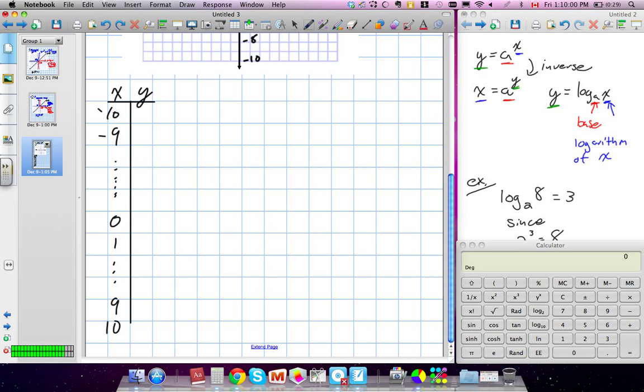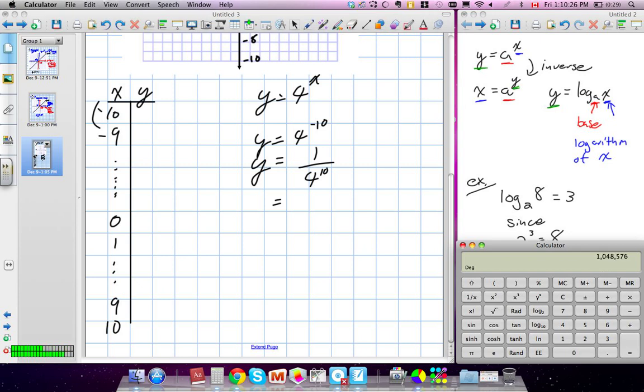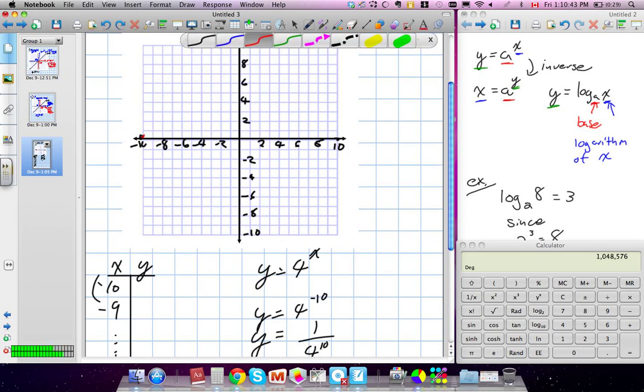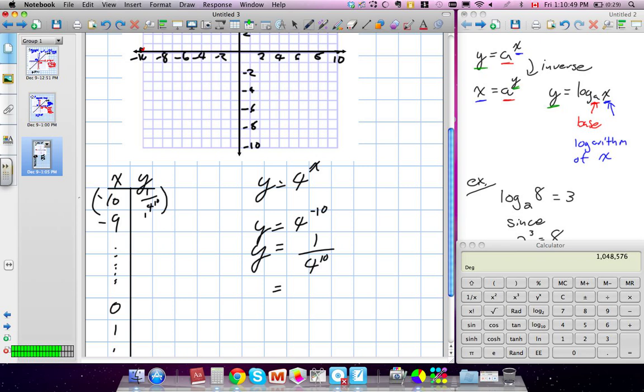We would plug those values into our equation, which is y is equal to 4. And I would start with my first value, because this is x. So my first value, we would do y is equal to 4 to the power of negative 10. Do you know how to flip an exponent? We essentially get y power of 1 over 4 to the power of 10. We'll be dealing with a fraction. So it's a very, very small number, 4 to the power of 10. Okay. So it's 1 divided by 1,048,576. So, in other words, that point is extremely close to the x-axis, but not on. It will eventually increase, increase, increase. This would be represented as 1 over 4 to the power of 9.